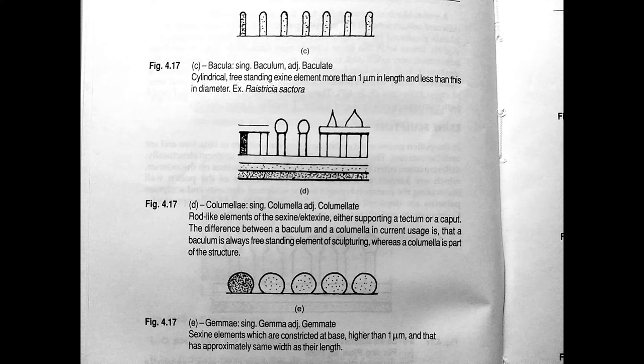Then we have gemmate. Here, sexine elements which are constricted at base, higher than one micrometer, and have approximately the same width as their length. So the width and the length are more or less the same.